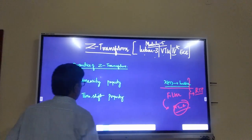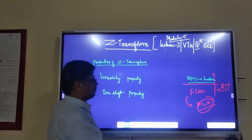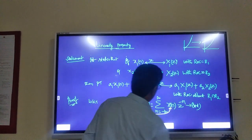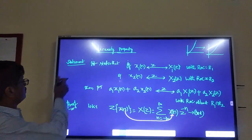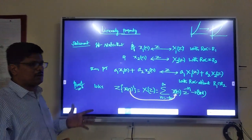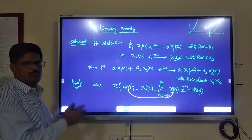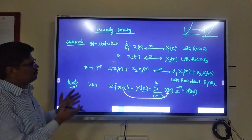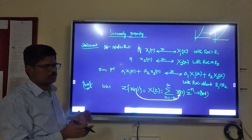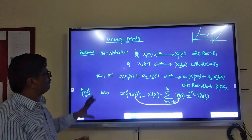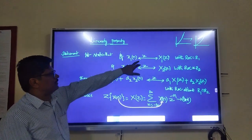These two properties play a very important role. Let me take the linearity property first in this session. Linearity property — what it says is that output should follow input linearly. If input is linear, then output should also be linear. It states that if we have more than one signal, the Z-transform of X1(n) gives X1(z).